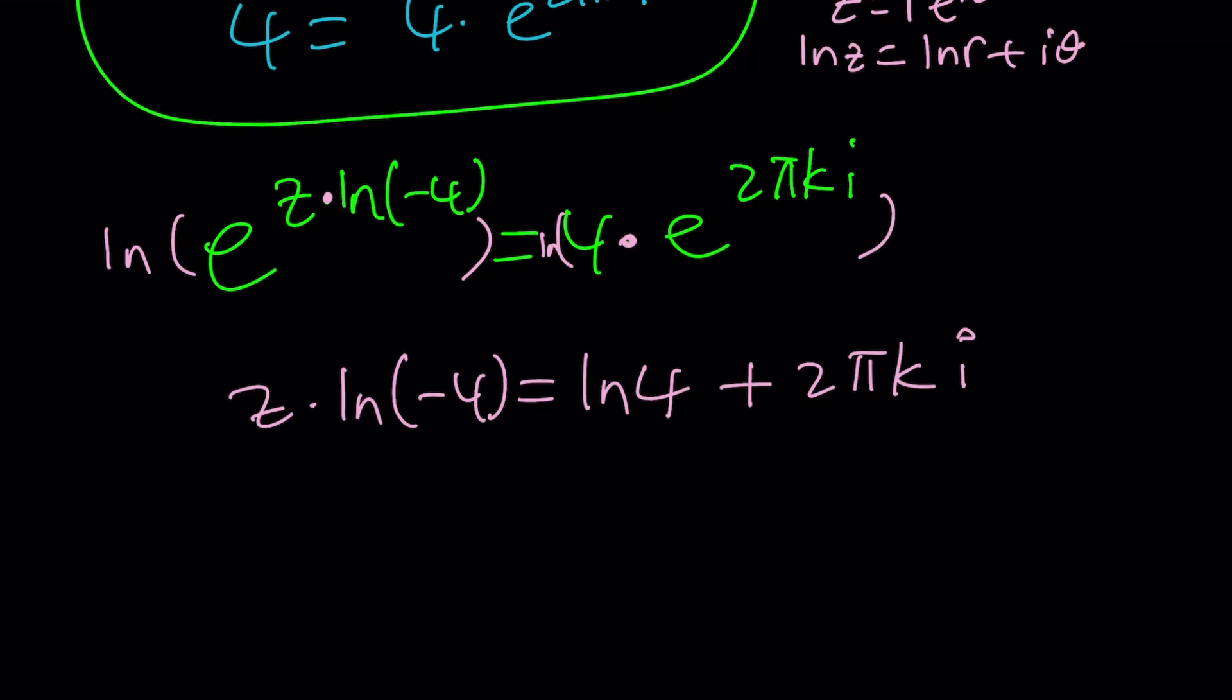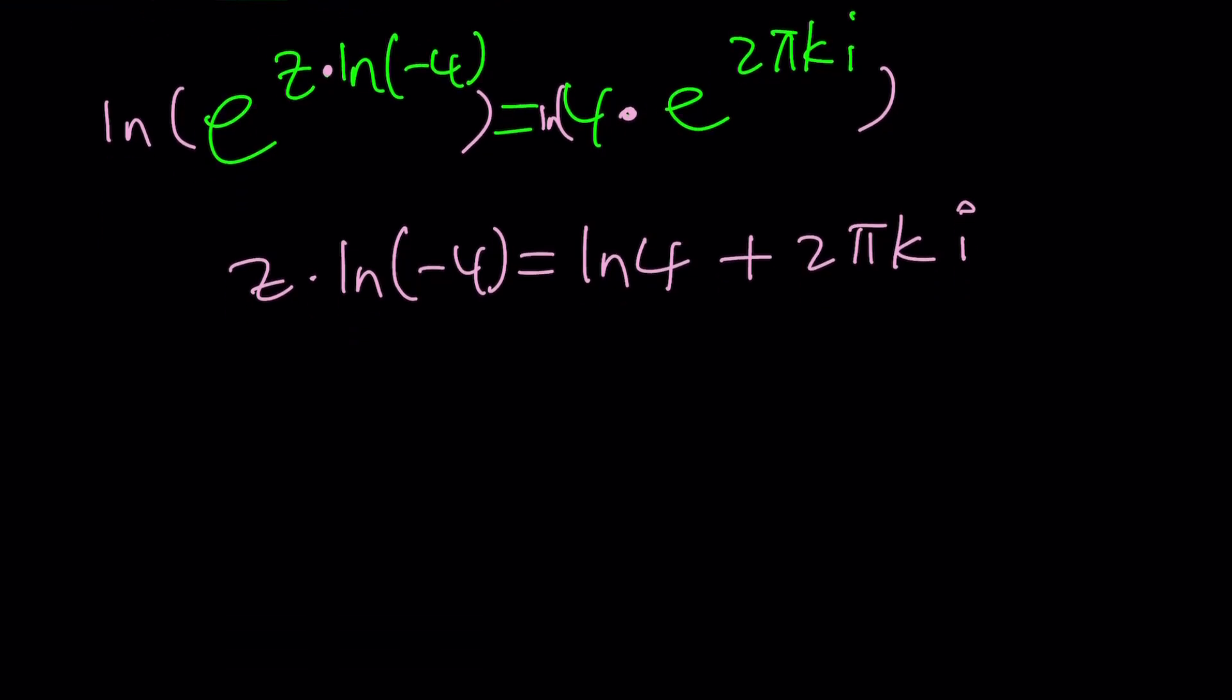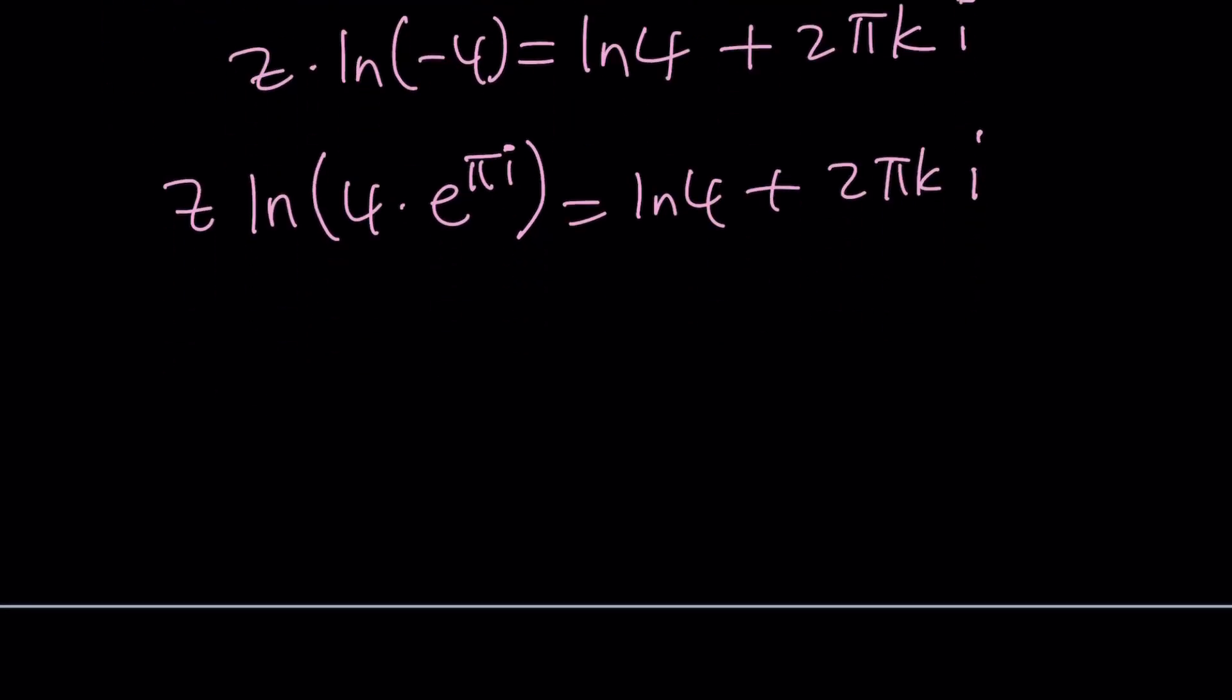Now, we have to divide both sides by something, right? But let's go ahead and write the negative 4 as 4 times e to the power pi i. And then set it equal to this again. Okay.